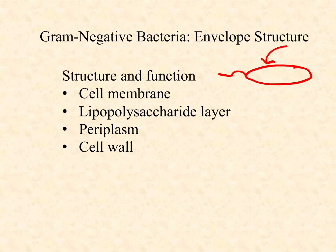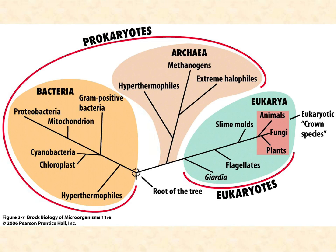So we're going to look at the cell membrane, which all cells have. And then we're going to look at the lipopolysaccharide layer, which is unique to the gram-negatives, as well as the periplasm, also unique to gram-negatives. And then briefly, we'll see the cell wall as well.